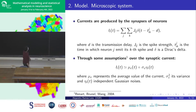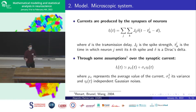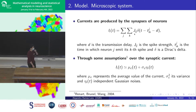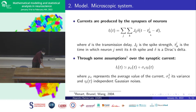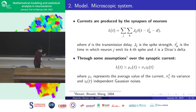The form of the synaptic current — the input current — is a sum over all neurons and all spikes of J, the synaptic strengths, times Dirac deltas centered at a time sequence. The time sequence is given by the times of the spikes, the times of every spike, minus the delay d.